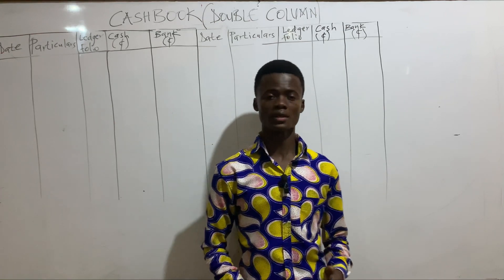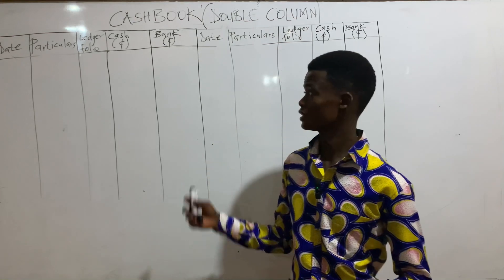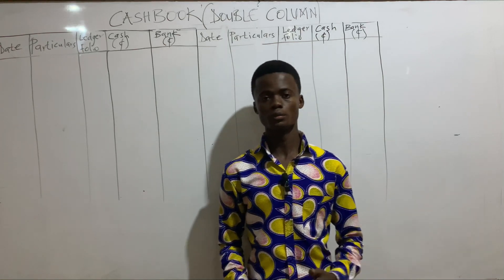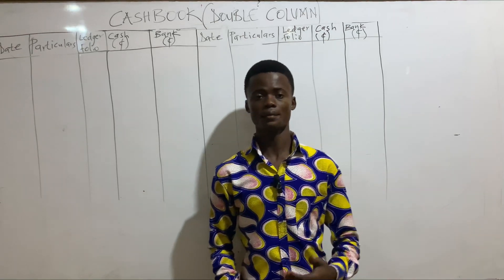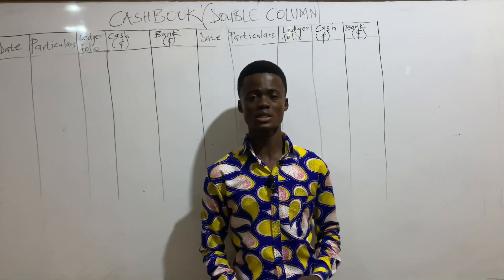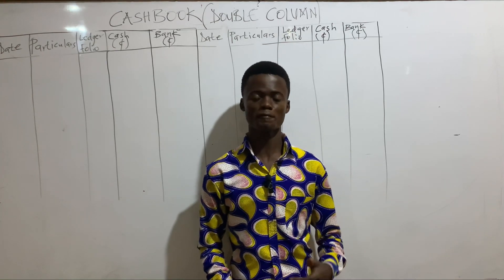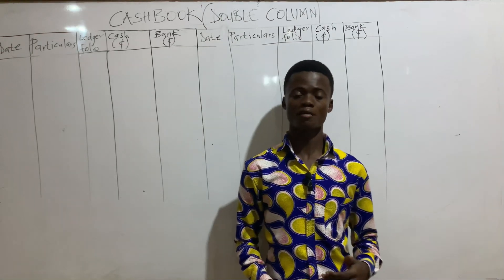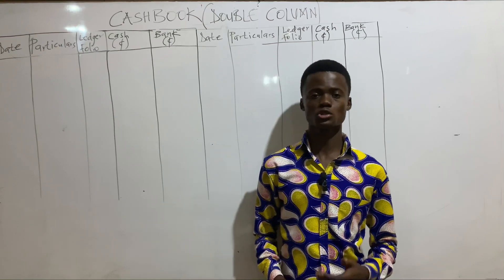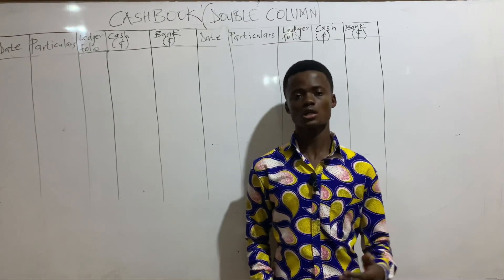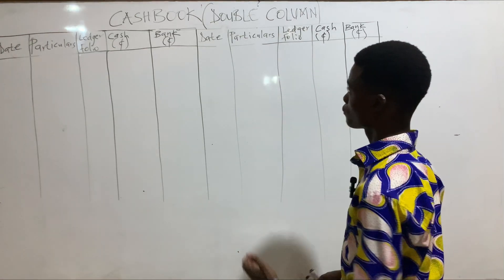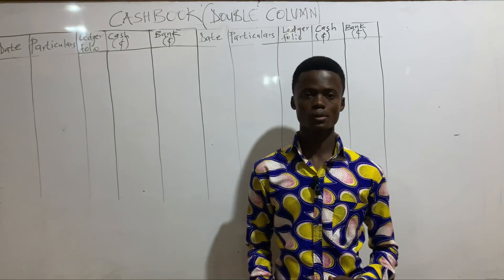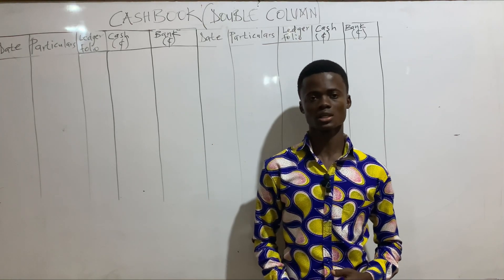Before taking a practice question, let me quickly remind you how to record accounting transactions. In our previous video, we said that in the two column cashbook, you will encounter contra entries. A contra entry is a situation where a transaction affects both the bank column and the cash column of the cashbook. Since every transaction should affect two accounts — one debited and the other credited — if both affected accounts are within the same cashbook, the transaction is considered a contra entry.